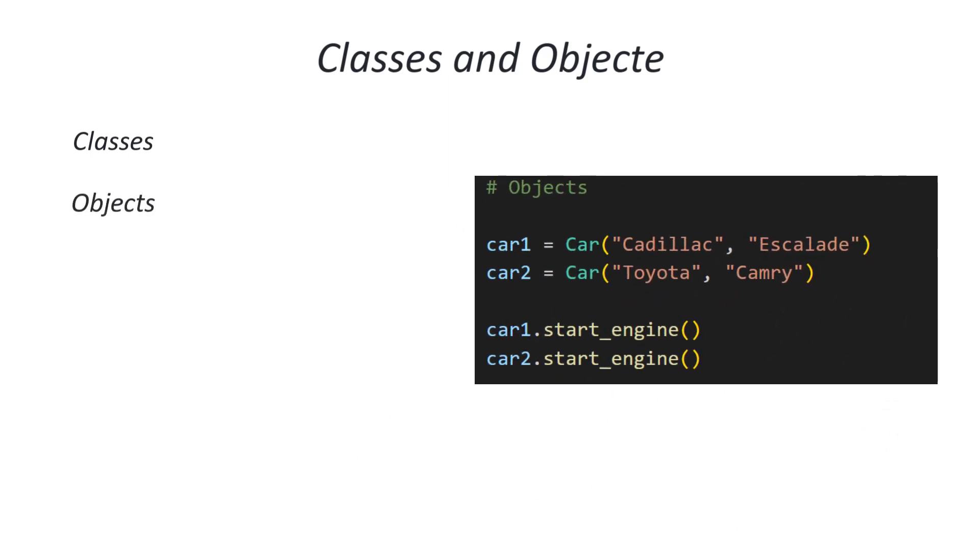Objects are instances of classes. They represent specific instances or occurrences of the class. You can create multiple objects or instances from a single class. Their use case is to instantiate multiple objects to represent distinct entities and perform specific actions. As you can see in this example, we instantiate two different cars, car1 and car2, from the car class, and the subsequent invocation of the drive method on each instance. Understanding classes and objects is crucial for building modular, maintainable, and scalable Python applications.